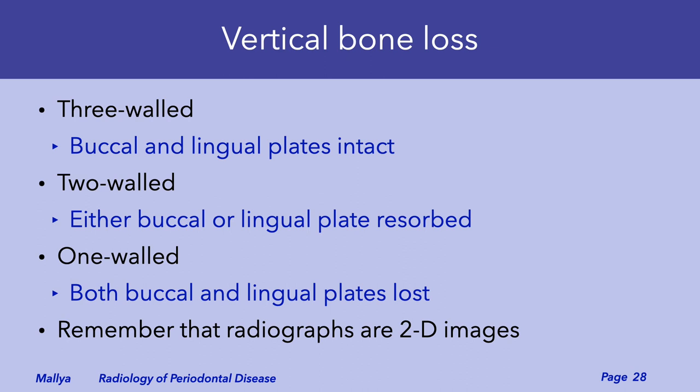In a three wall defect, both the buccal and the lingual plates are intact. In a two wall defect, either the buccal or the lingual plate is lost. Both the buccal and the lingual plates are lost in a one wall defect. However, remember that radiographs are two-dimensional images and the buccal and lingual plates can only be inferred.